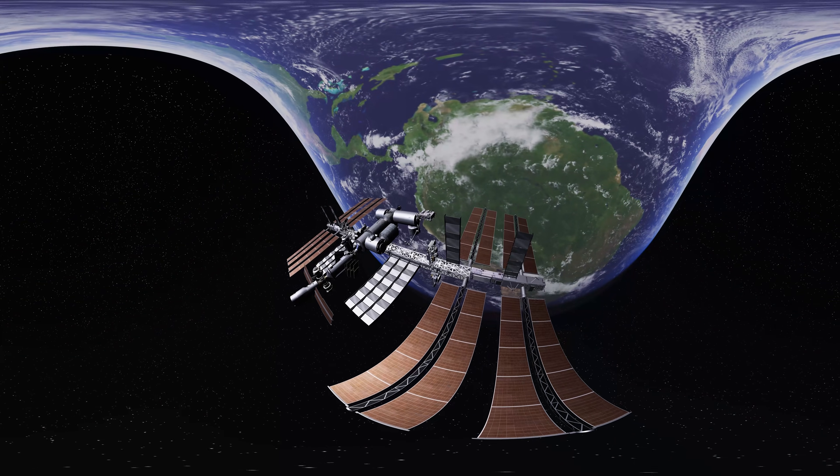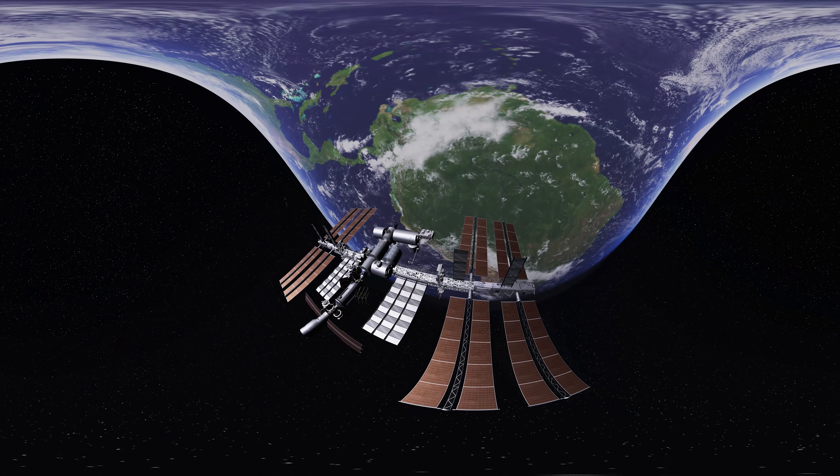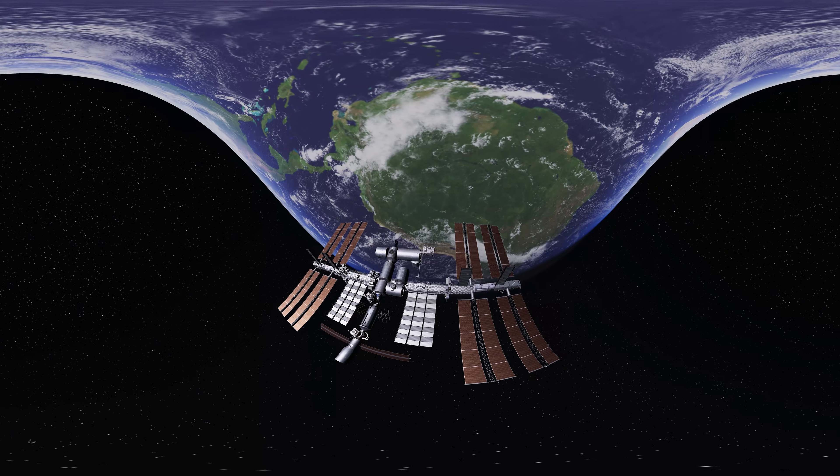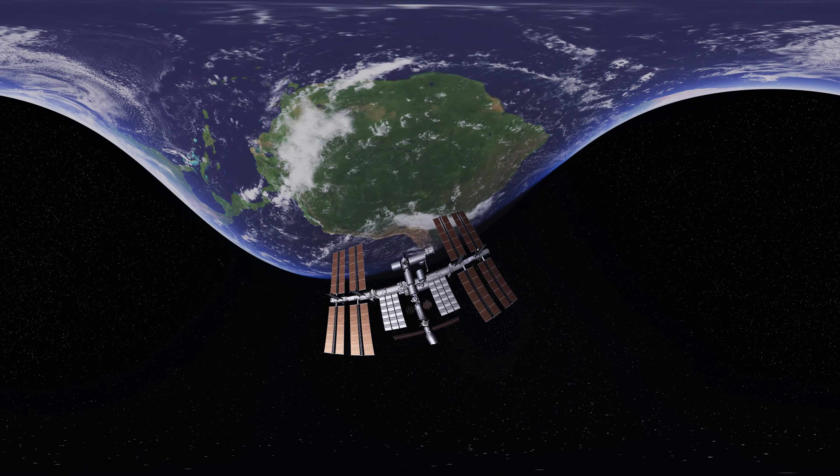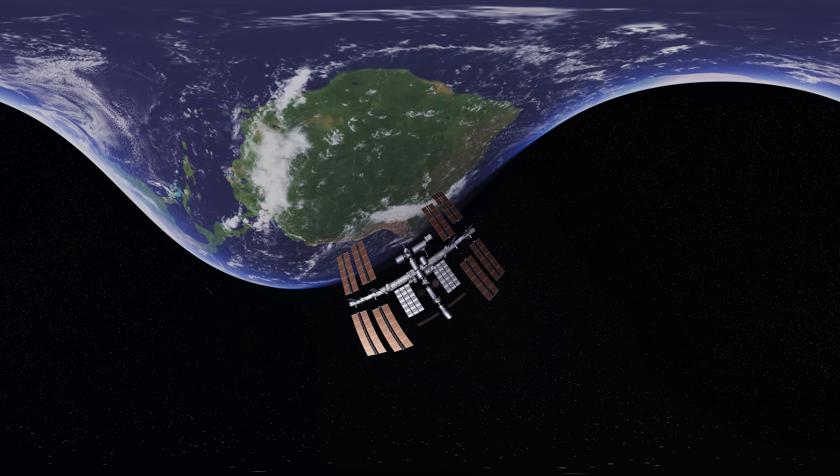The station consists of millions of modern components. The ISS contains 16 modules with living quarters, bedrooms, observation deck, and six laboratories.